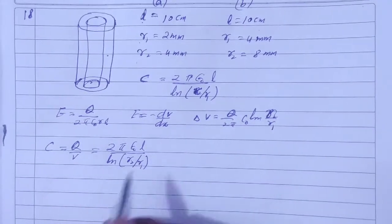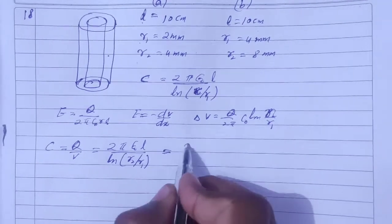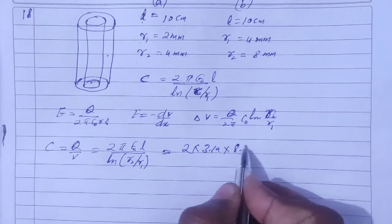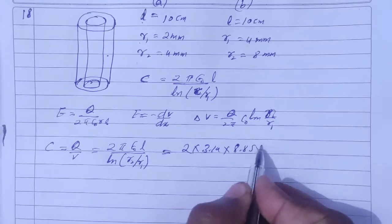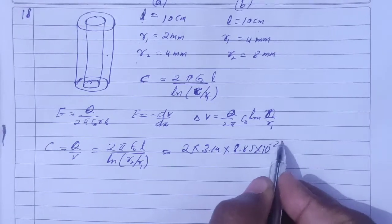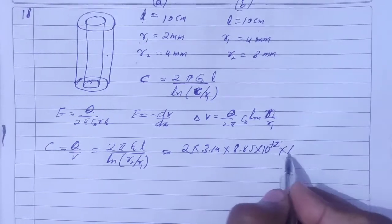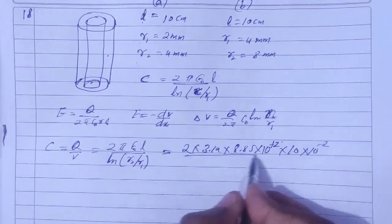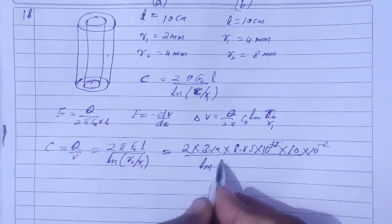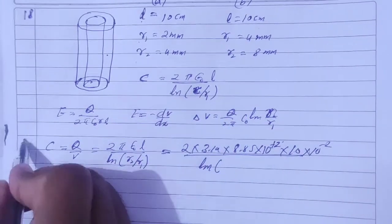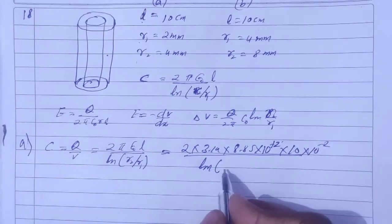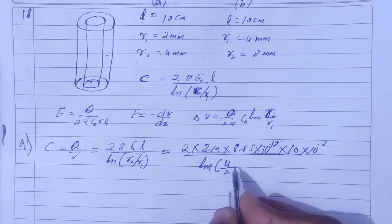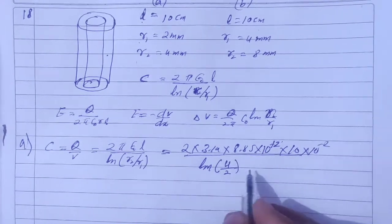Now let's put in the values. 2π is 3.14, ε₀ = 8.854 × 10⁻¹², L = 10 cm. R2 is 4 mm and R1 is 2 mm, so R2/R1 = 4/2 = 2.